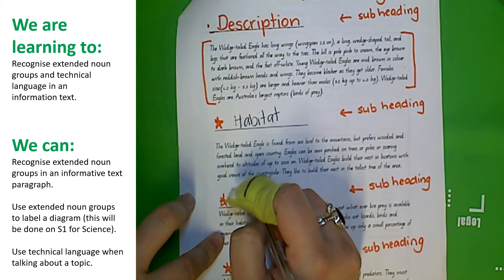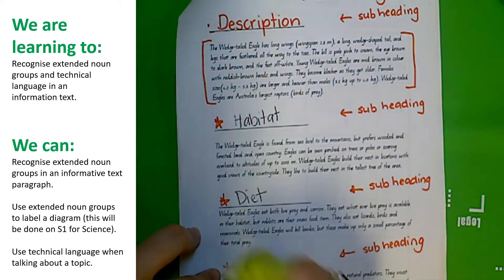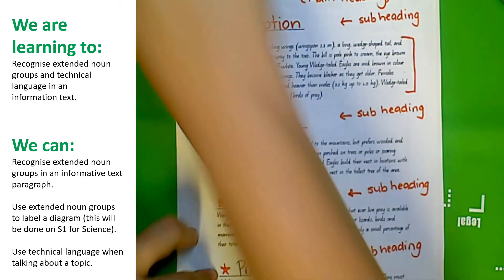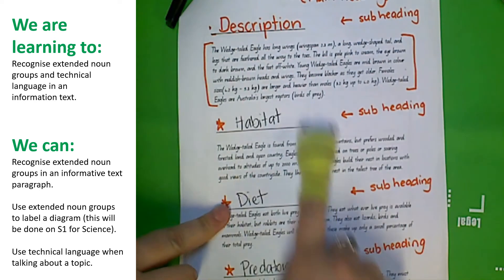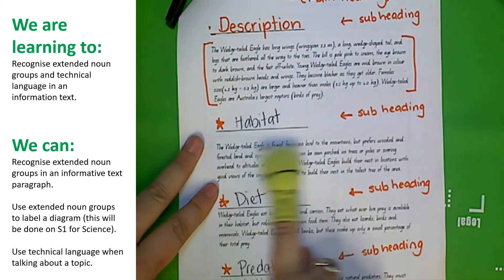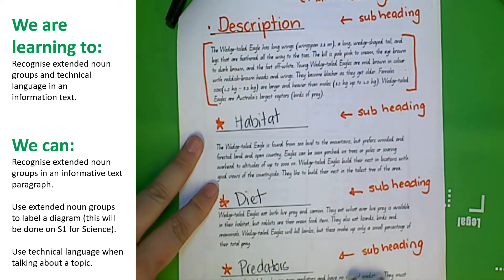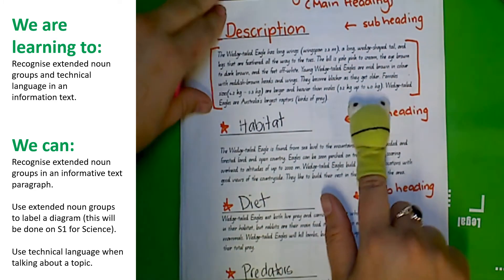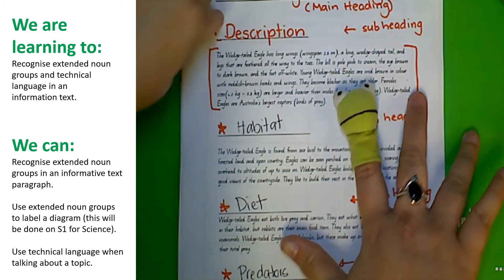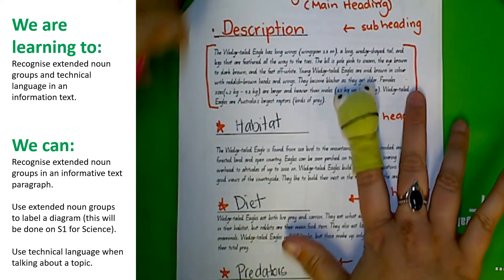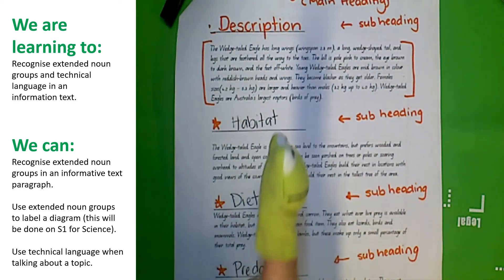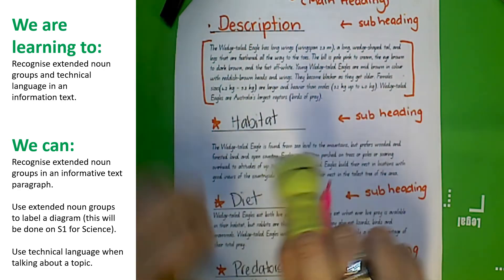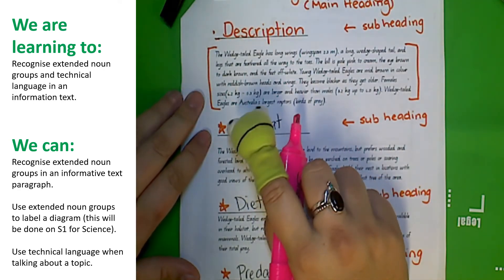This one is diet, this one was predators. Now what we're going to do is we're going to reread each of these paragraphs and we're going to find the extended noun groups. Now Froggy McFrogface was a little nervous at first because wedgetail eagles scare him, but he has moved on and he's ready to help read about them and find the noun groups.